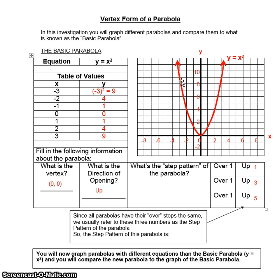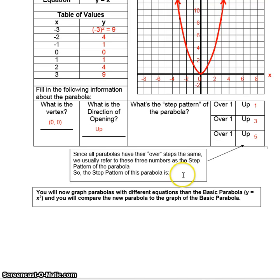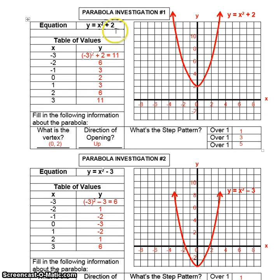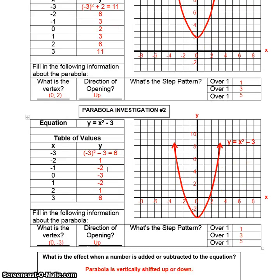Now, what we're going to do is, we're going to start manipulating the equation and seeing what kind of transformations happen when you change the equation around. In these examples, I'm going to add and subtract numbers from the back of the graph, and it looks like when I add two, the graph went up two. When I subtracted three, it went down three. So this number at the back represents your k value, and your k value makes the parabola shift vertically up or down.